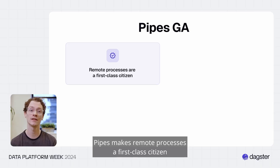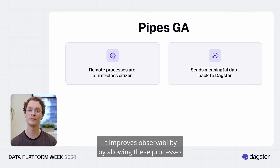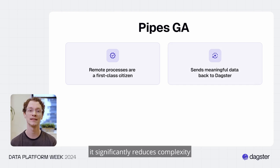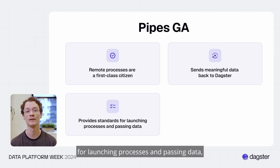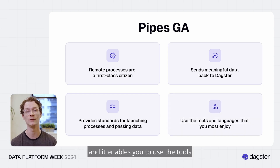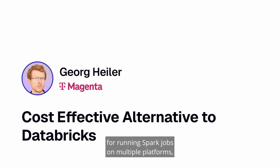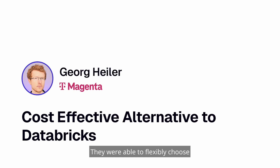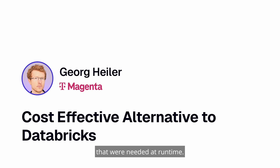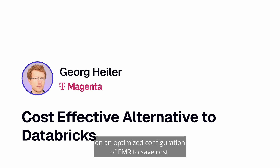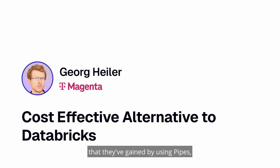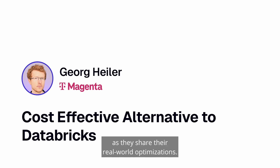Pipes makes remote processes a first-class citizen in the orchestrator. It improves observability by allowing these processes to send meaningful data back to Daxter, significantly reduces complexity by providing a standard way for launching processes and passing data, and enables you to use the tools and languages you most enjoy. Coming up, we have a presentation from Georg Heiler from Magenta, demonstrating how his team adopted Daxter Pipes for running Spark jobs on multiple platforms — flexibly choosing between Databricks or EMR depending on runtime needs, such as Photon-enabled jobs on Databricks versus cost-optimized configurations on EMR.